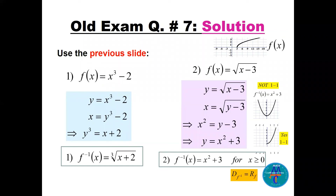For part one, f(x) = x³ − 2: put y = x³ − 2, interchange, solve — giving f⁻¹(x) = ∛(x + 2). For part two, f(x) = √(x − 3): following the same steps, we get y = x² + 3. But we must add a condition because the range of f is [0, ∞), which becomes the domain of the inverse. Taking the whole parabola x² + 3 is not one-to-one, so we restrict to x ≥ 0, giving f⁻¹(x) = x² + 3, x ≥ 0.